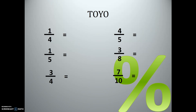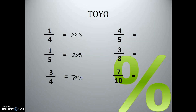Here are the answers to the remaining practice problems: one fourth is 25%, one fifth is 20%, three fourths is 75%, four fifths is 80%, three eighths is 37.5%, and seven tenths is 70%.